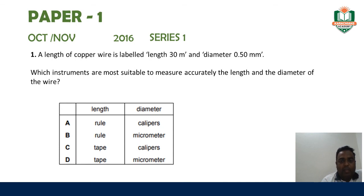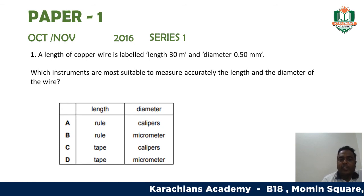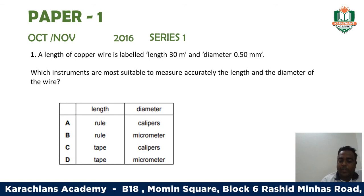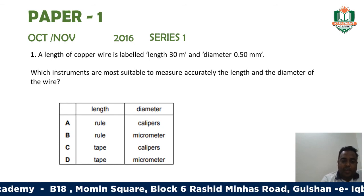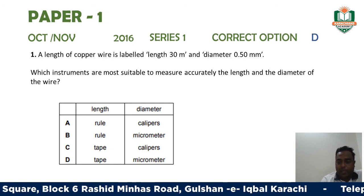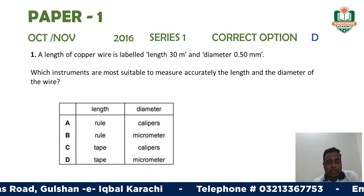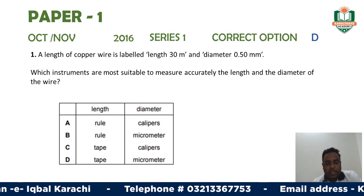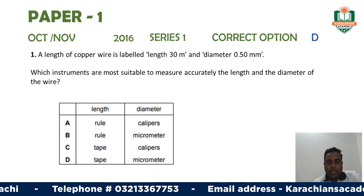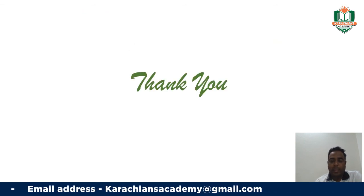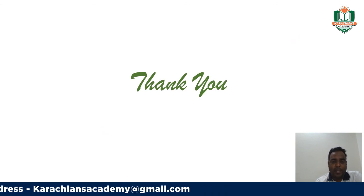For the diameter, since it is given in millimeters, we must use a micrometer to measure it. Therefore the correct option is option D — the length is measured using measuring tape and the diameter is measured using a micrometer. Thank you for watching. Allah Hafiz.